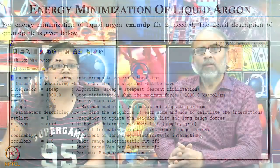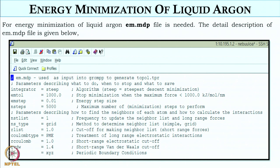Next we will perform energy minimization of liquid argon. Why do we need energy minimization? Because in PACKMOL, we started with a random configuration — we only specified a minimum distance tolerance between atoms. This is not a properly equilibrated or energy-minimized configuration, so we need an energy-minimized configuration to start with. With energy minimization we get a local minimum, and the chance of a successful simulation is much higher.